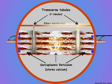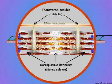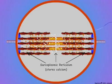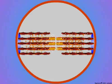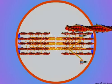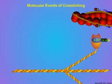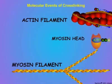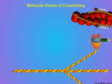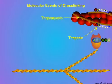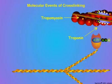Depolarization of the T-tubule membrane activates calcium release channels of the sarcoplasmic reticulum to release stored calcium into the sarcoplasm. The released calcium then initiates muscle contraction by binding to a protein called troponin. Calcium-activated troponin causes a conformational shift in the protein tropomyosin, which winds around the actin helix and blocks the myosin binding sites on the actin molecules.